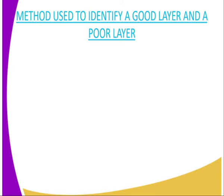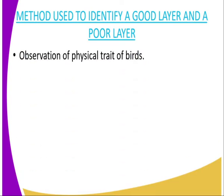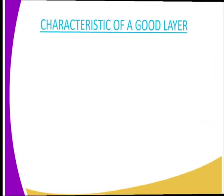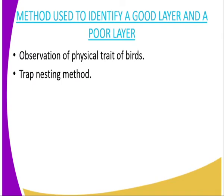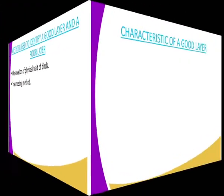Methods used to identify a good layer and a poor layer: the first one is observation of physical traits of the bird — for example, the beak. Those which have a yellow beak are poor layers and should be eliminated. The second method is the trap nesting method. In trap nesting, you put a nest where the bird goes to lay, and upon laying it is trapped there. You mark it and remove it. Over several occasions, birds that remain unmarked are identified as poor layers or non-layers.